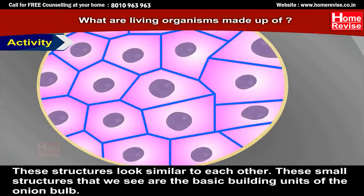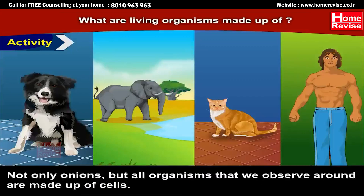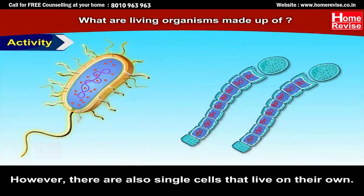Observe this slide under a compound microscope. What structures can you see? These structures look similar to each other. These small structures are the basic building units of the onion bulb — they are called cells. Not only onions, but all organisms we observe around us are made up of cells. However, there are also single cells that live on their own.